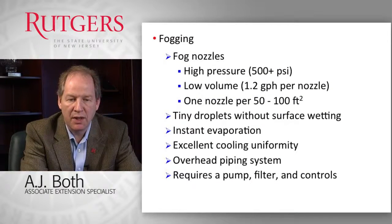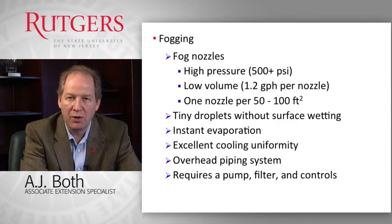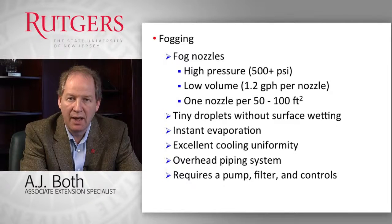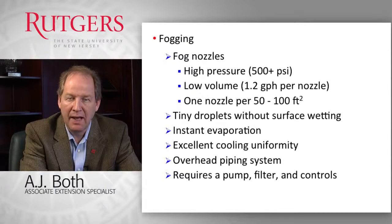The other system specifically designed for evaporative cooling is a fogging system. It works much the same as a misting system, except we use much higher pressures, less volume of water flowing through each nozzle, and therefore we create much finer droplet sizes. Those very small droplets evaporate very rapidly, and as a result we try to prevent any wetting of leaf surfaces in order to prevent disease issues.